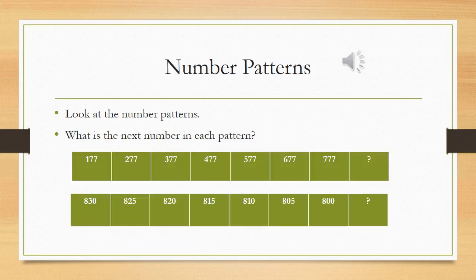Okay class, the next topic of this chapter is number patterns. First we understood counting, then the international number system, then place value and the value of a digit in a number, and then we differentiated between place value and face value. After that we are moving towards the topic of number patterns. Look at a number pattern — we need to find what the next number is in each pattern.